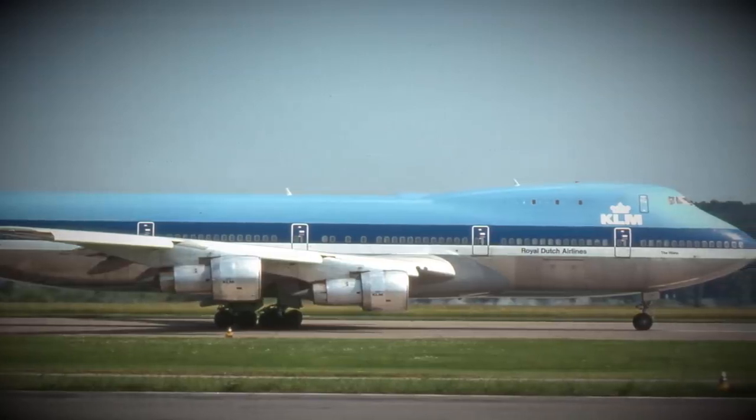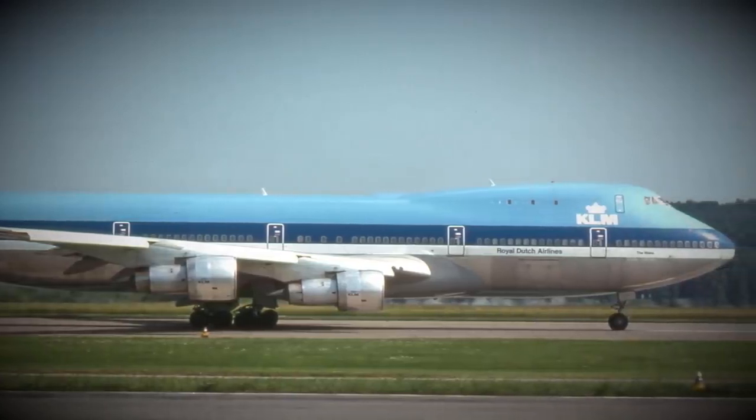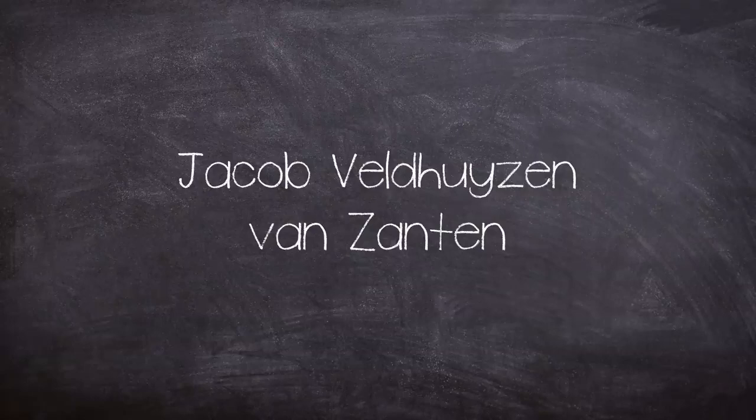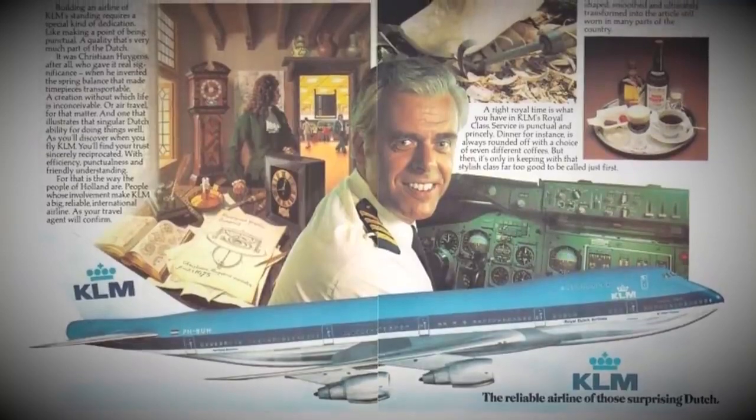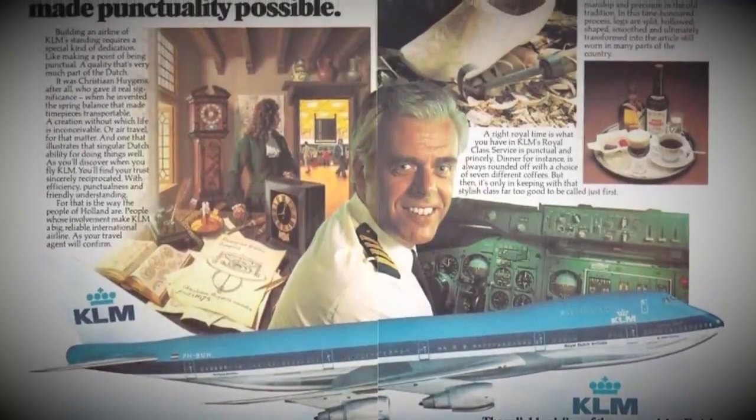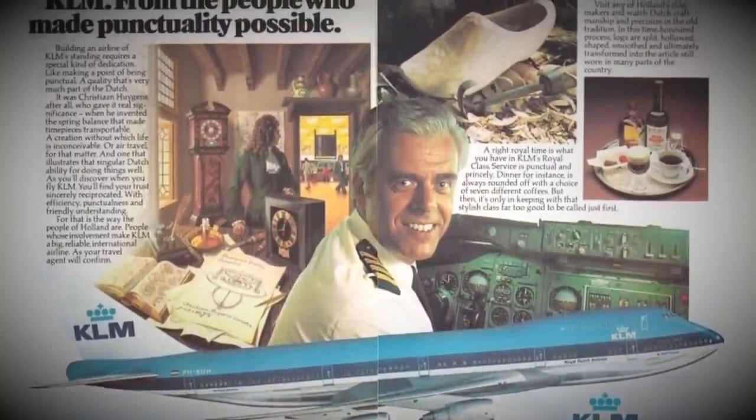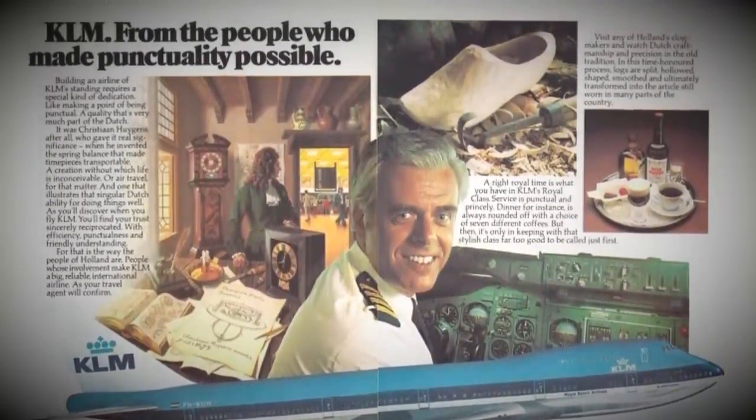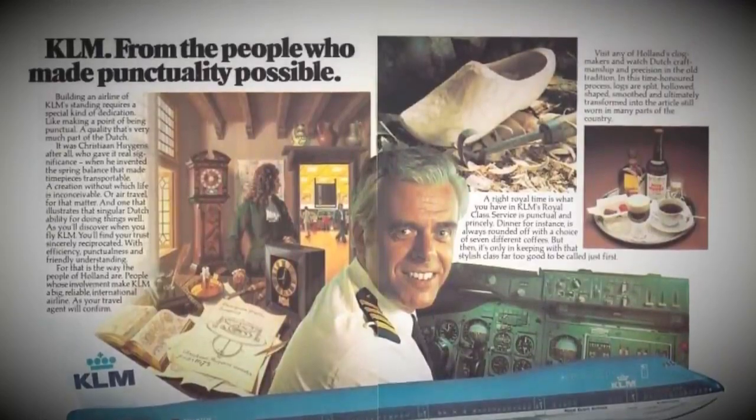The crew were also experienced but was captained by somewhat of a KLM celebrity, Jacob Veldhuyzen van Zanten, aged 50. Van Zanten was KLM's star pilot and head 747 training instructor. So much was his value to the company that his face was even on advertising material for the airline.